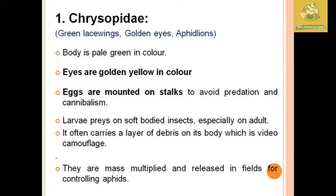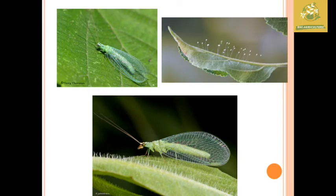While seeing about the Chrysopidae characteristics, the body is pale green in color and the eyes are golden yellow in color. These are the three major characteristics to remember. The larvae prey on soft-bodied insects, especially aphids. They are mass-multiplied and released as a form of biological control, used in integrated pest management for controlling aphids.